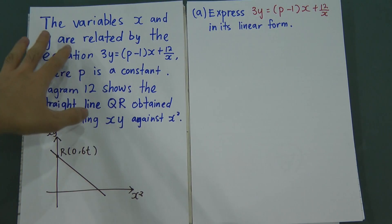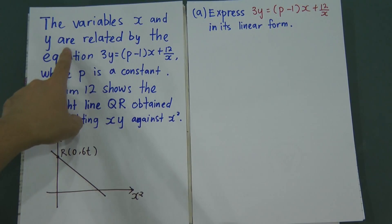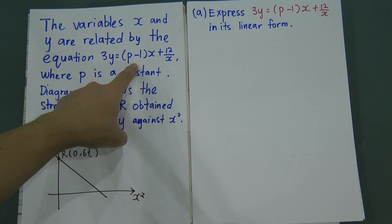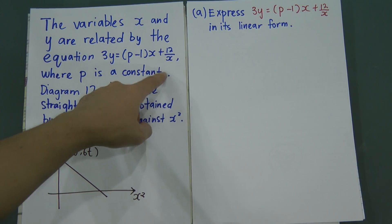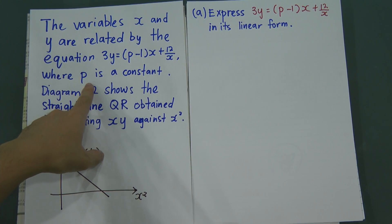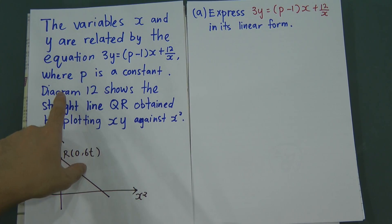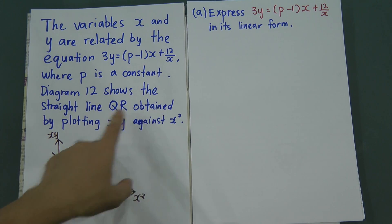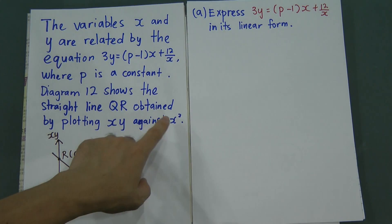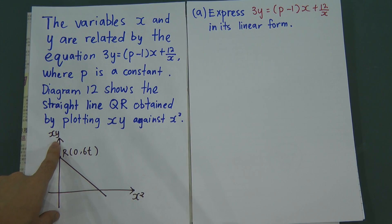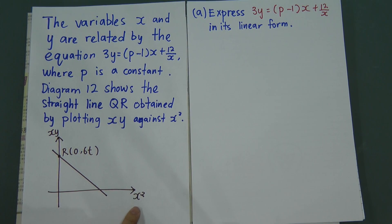The question states that variables x and y are related by the equation 3y = (p−1)x + 12/x, where p is a constant — meaning p is a number. Diagram 12 shows the straight line QR obtained by plotting xy against x².